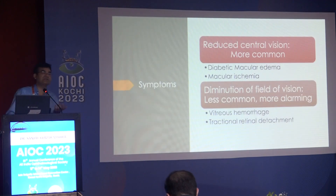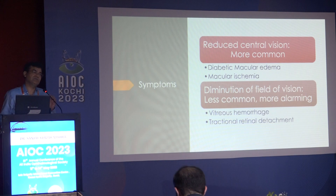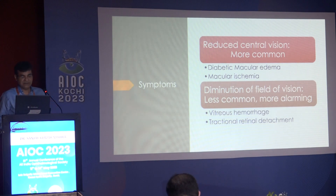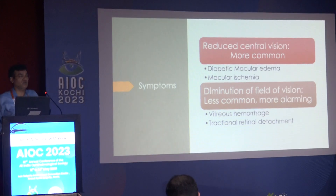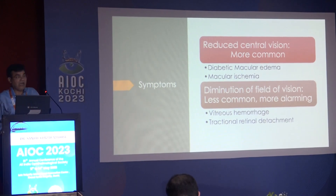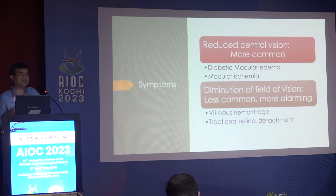What is the common symptom? How does the patient come to you? They usually come with diminution of central vision, which happens because of diabetic macular edema or ischemia. They can also come with a field defect. Field defects come in an advanced stage when you have a traction retinal detachment or a vitreous hemorrhage.